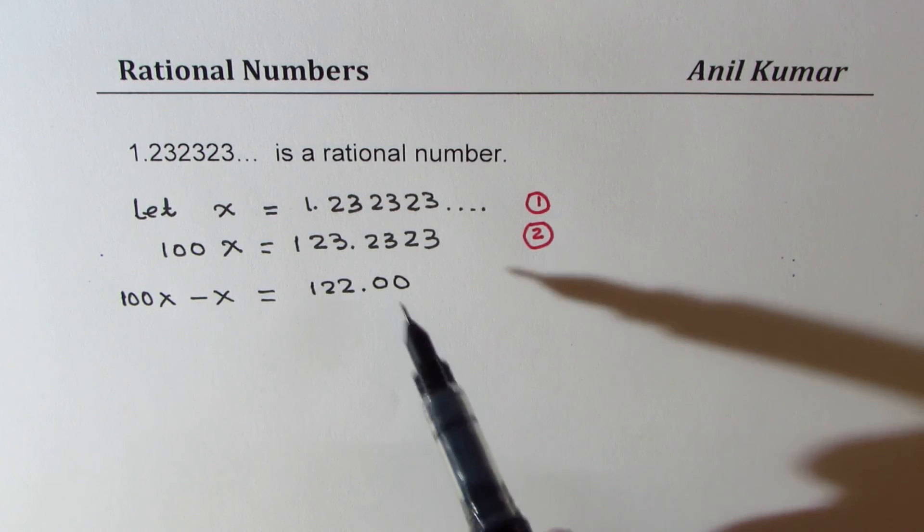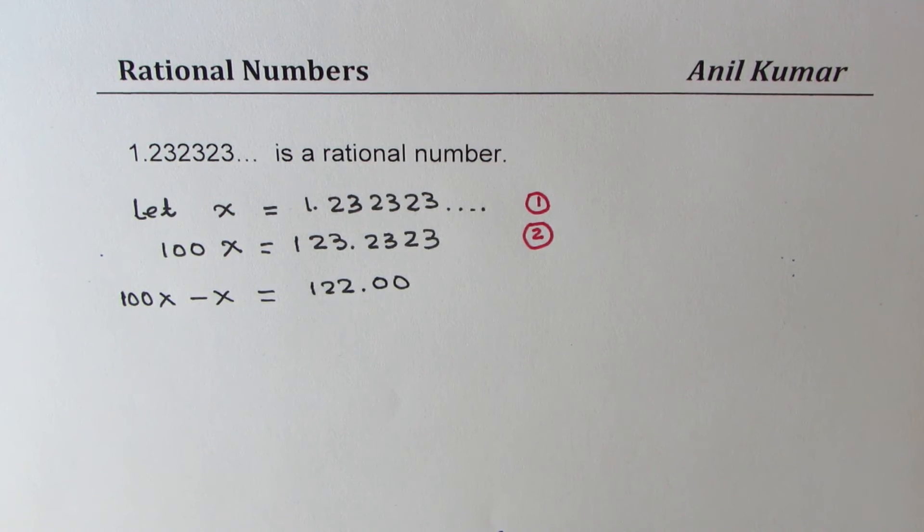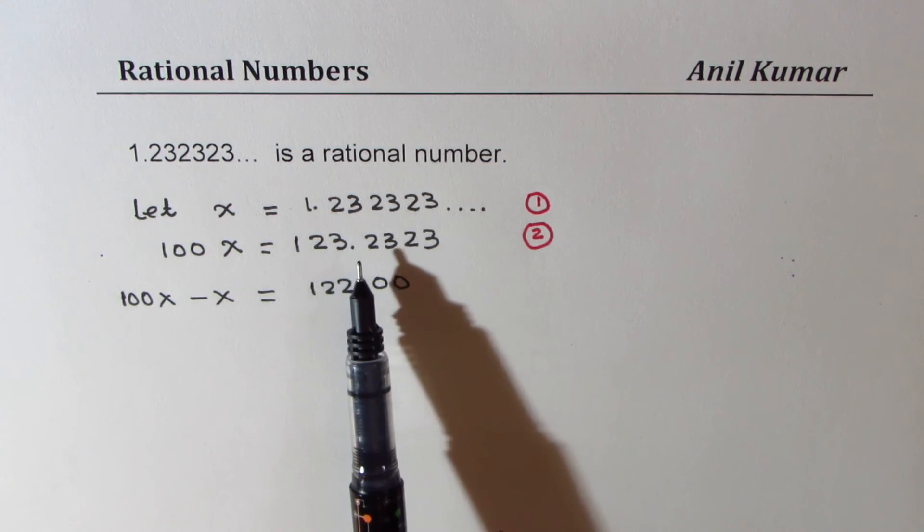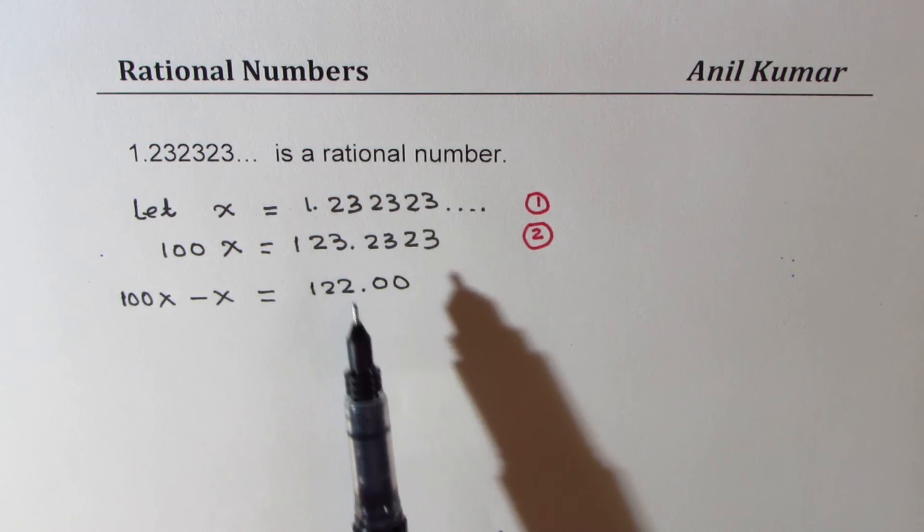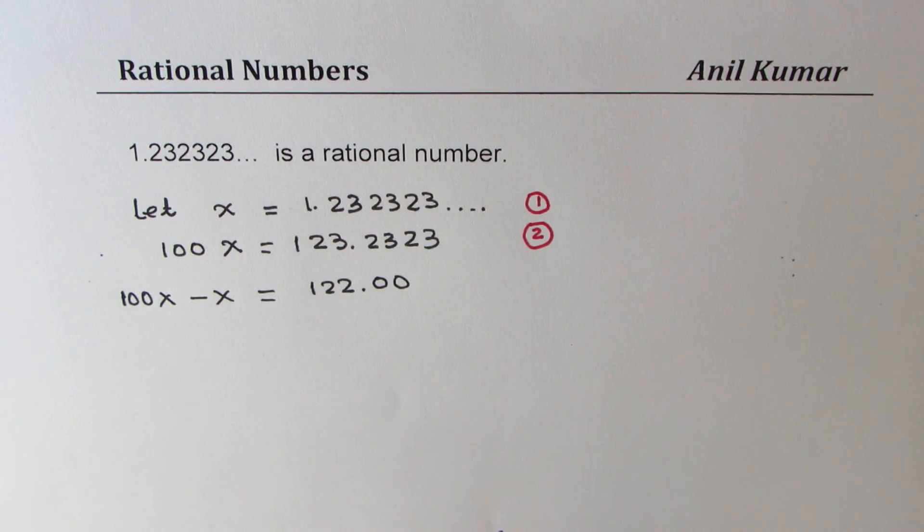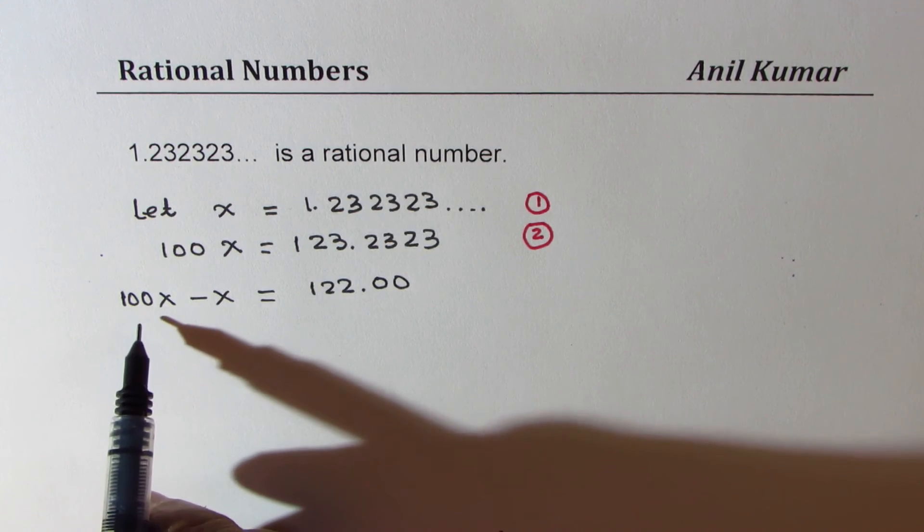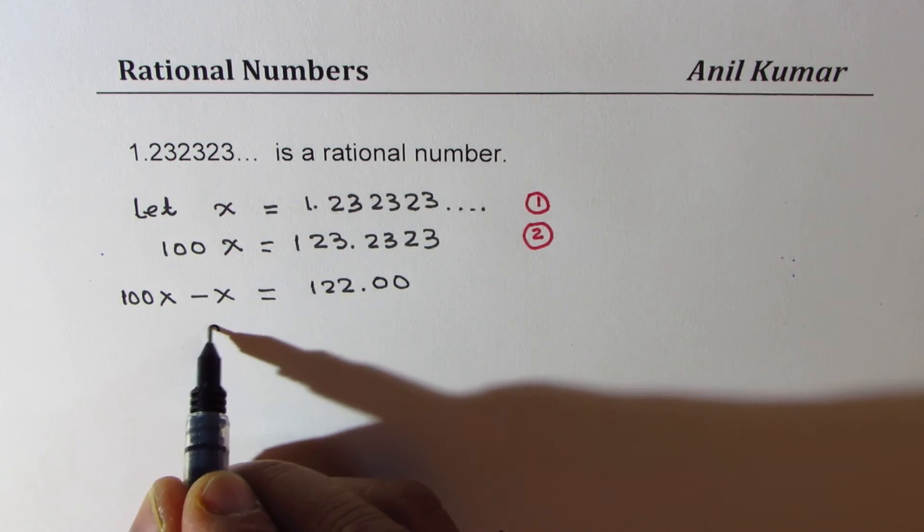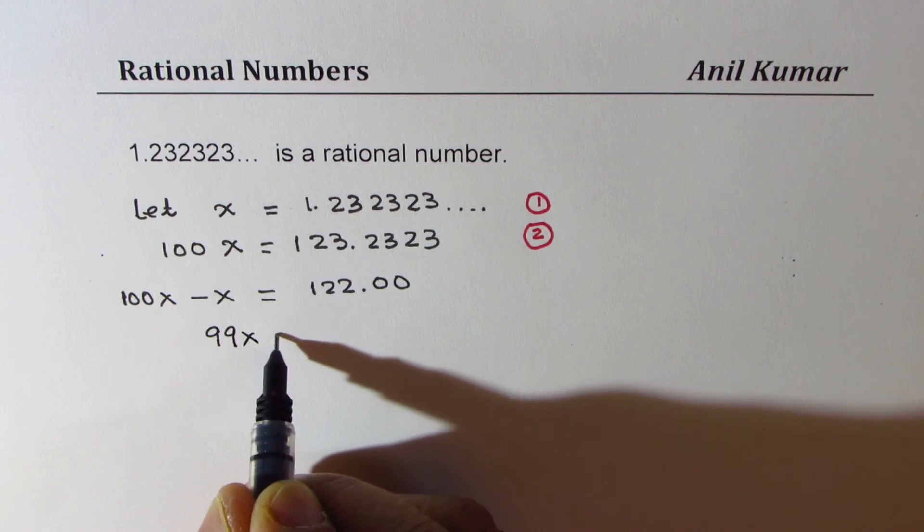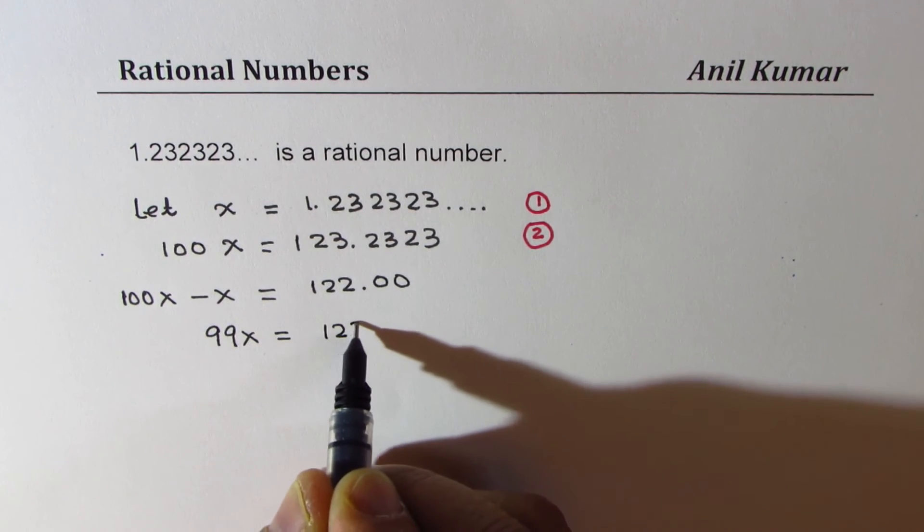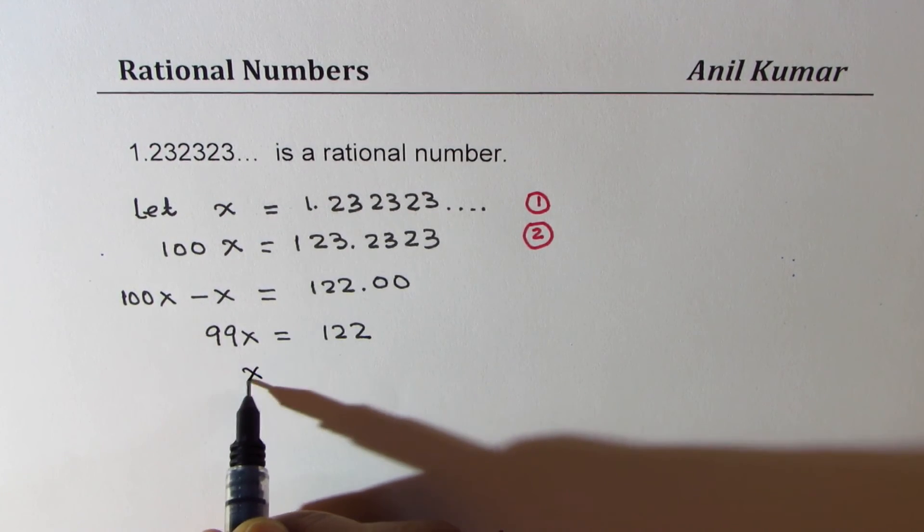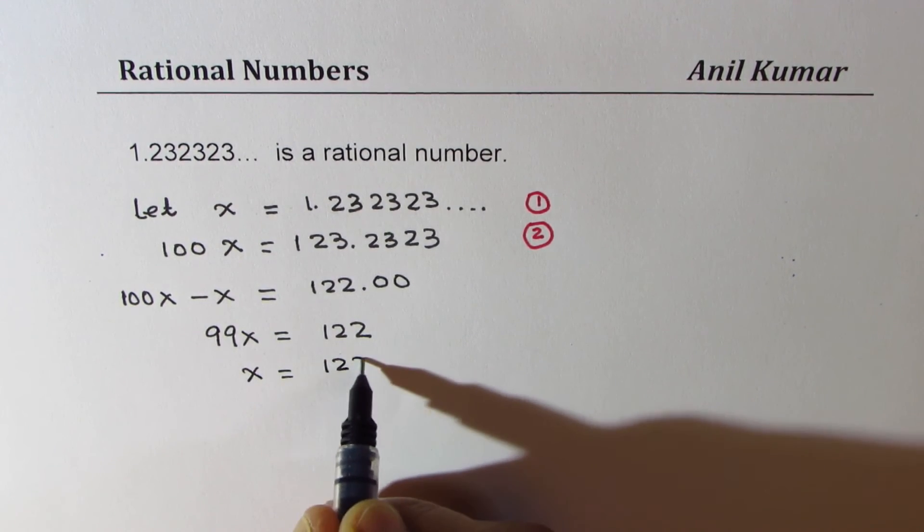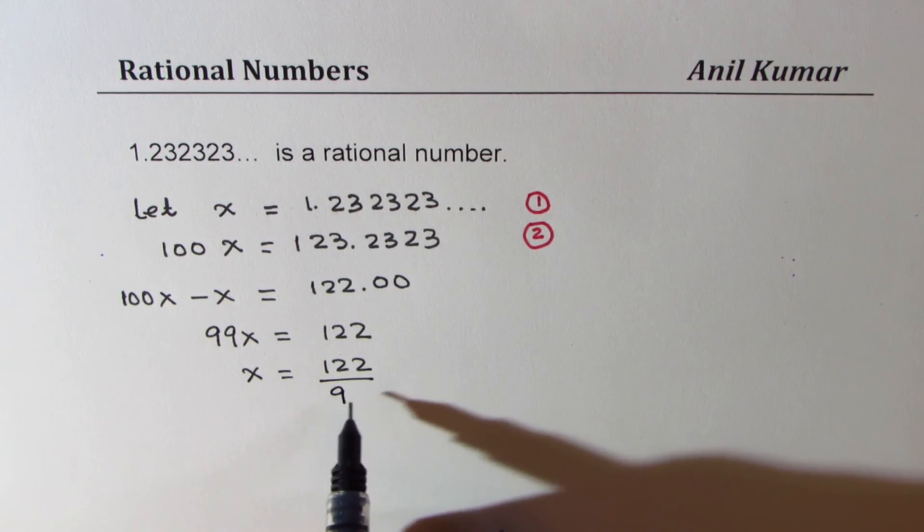So the strategy here is somehow to get a situation where the repeating part cancels out. Now, it is easy to solve. 100 minus 1 is 99. So 99x is equal to 122. And x is equal to 122 over 99.